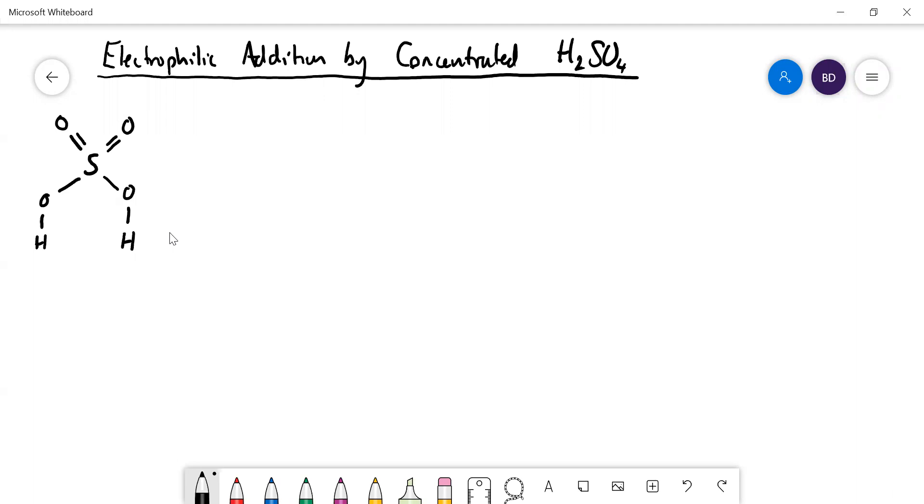Concentrated sulfuric acid is an oily liquid and it will have this covalent structure here as long as no water is added.